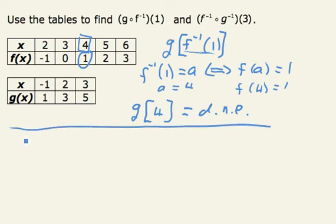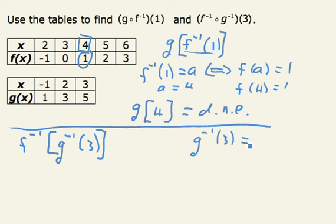The second problem asks us to find F inverse of G inverse of 3. Again, working from the inside out, if G inverse of 3 is some number B, that means G of B must be 3.